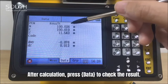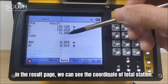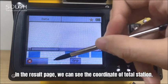After calculation, press Data tab to check the result. In the result page, we can see the coordinate of total station.